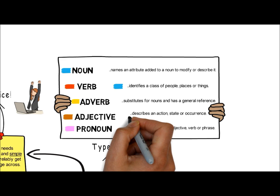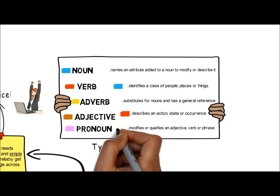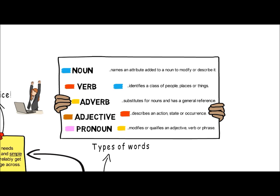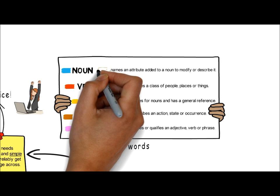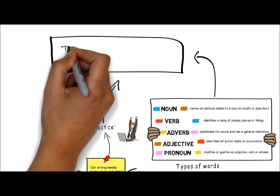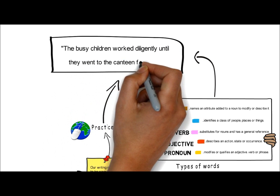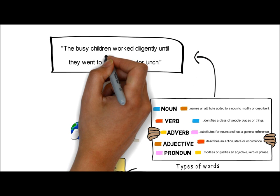A verb describes an action, state or occurrence. An adverb modifies or qualifies an adjective, verb or phrase. An adjective names an attribute added to a noun to modify or describe it. A pronoun substitutes for nouns and has a general reference. An example sentence using each of these types of words is: 'The busy children worked diligently until they went to the canteen for lunch.' You can pause the video and take a moment to identify each of these word types.